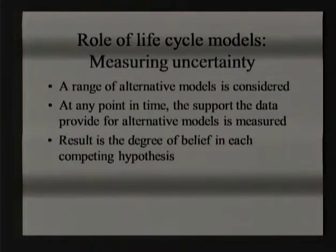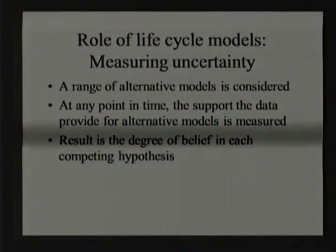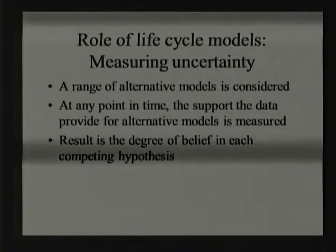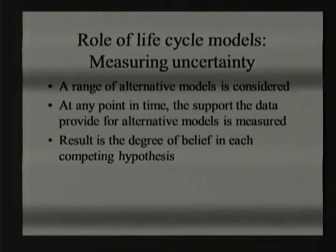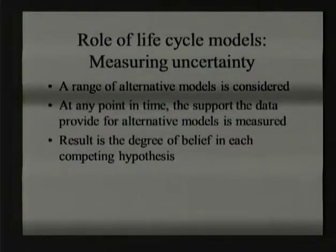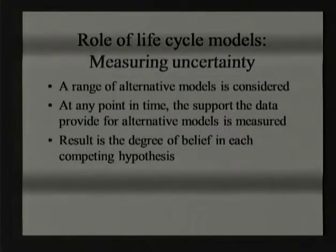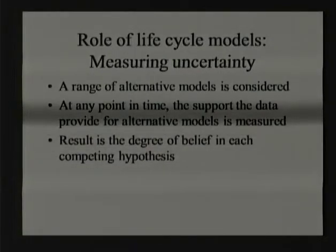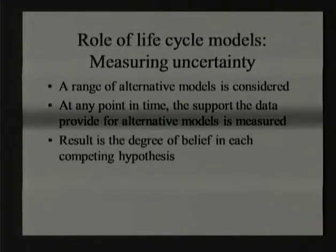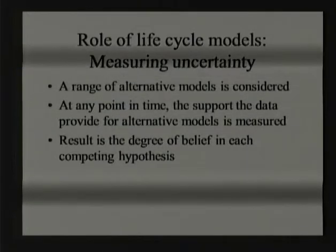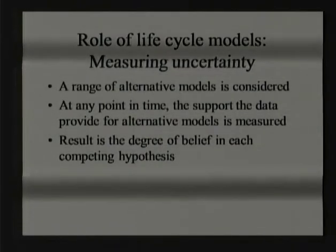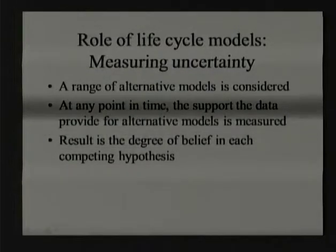One role for life cycle models is measurement of uncertainty. You consider a series of alternative models — there is no single model. At any point in time, we use the data to determine how much support the alternative models have: is the data most consistent with model A, B, or C? The result isn't a single best model; it's a degree of belief in each of the competing models. In almost any resource situation, you're left with more than one alternative model about how the factors you control affect survival.